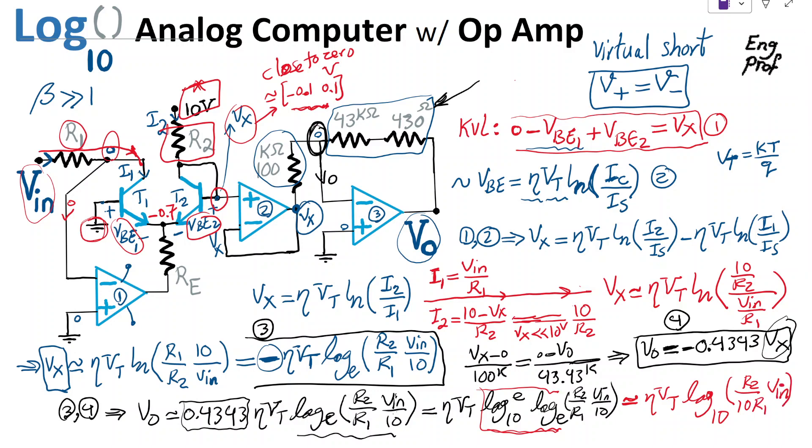That's exactly what we wanted to prove, that the output of this interesting circuit, Vout, is just equal to a scaled version of the base 10 logarithm of a scaled version of Vin. So we prove that this is really an analog calculator or computer that is able to compute the base 10 logarithm of the applied input voltage. I hope that this is helpful. Thank you.